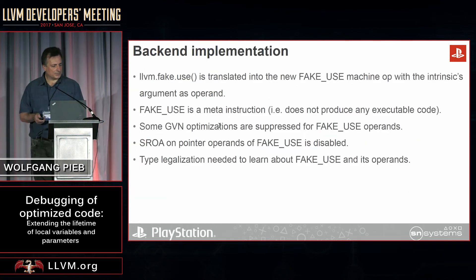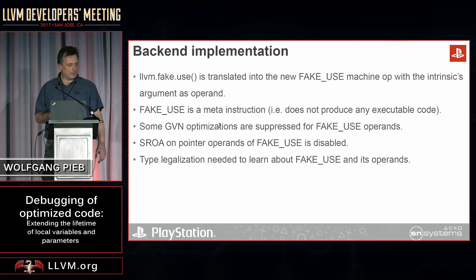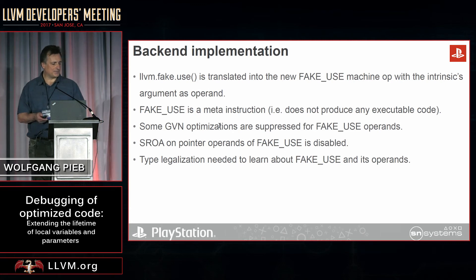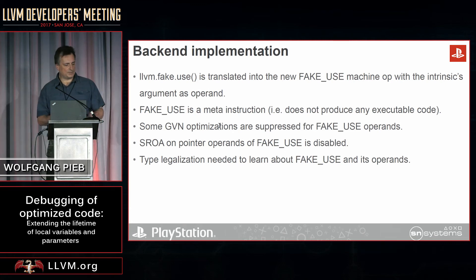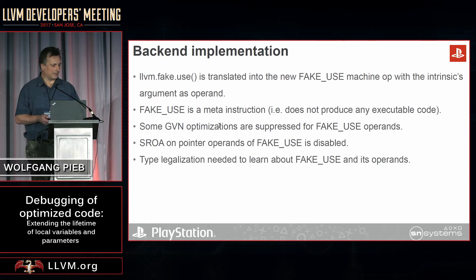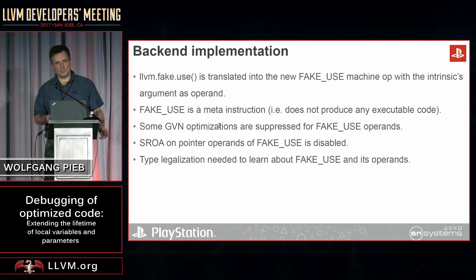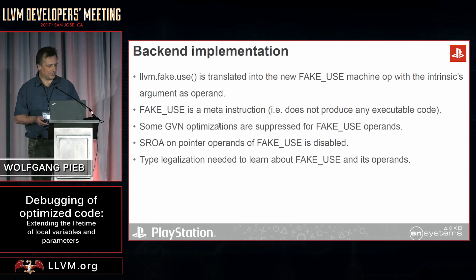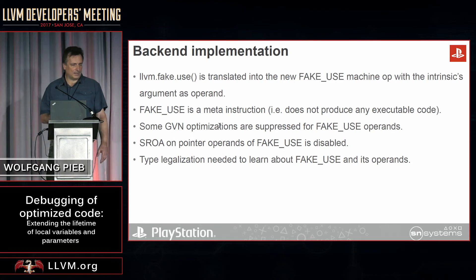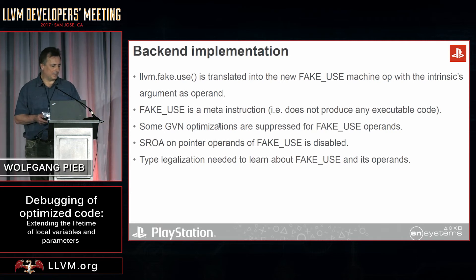What's going on in the back end? We're translating the intrinsic to a new fake use machine op — that's in LLVM parlance a meta instruction — it doesn't generate any code and just convinces the compiler to keep the value around. We had to suppress a couple of optimizations that would otherwise break up the fake use operand too much and destroy the connection with the debug information. The largest body of code was probably in the type legalizer, which had to learn about fake use operands and make them palatable to the rest of the compiler.